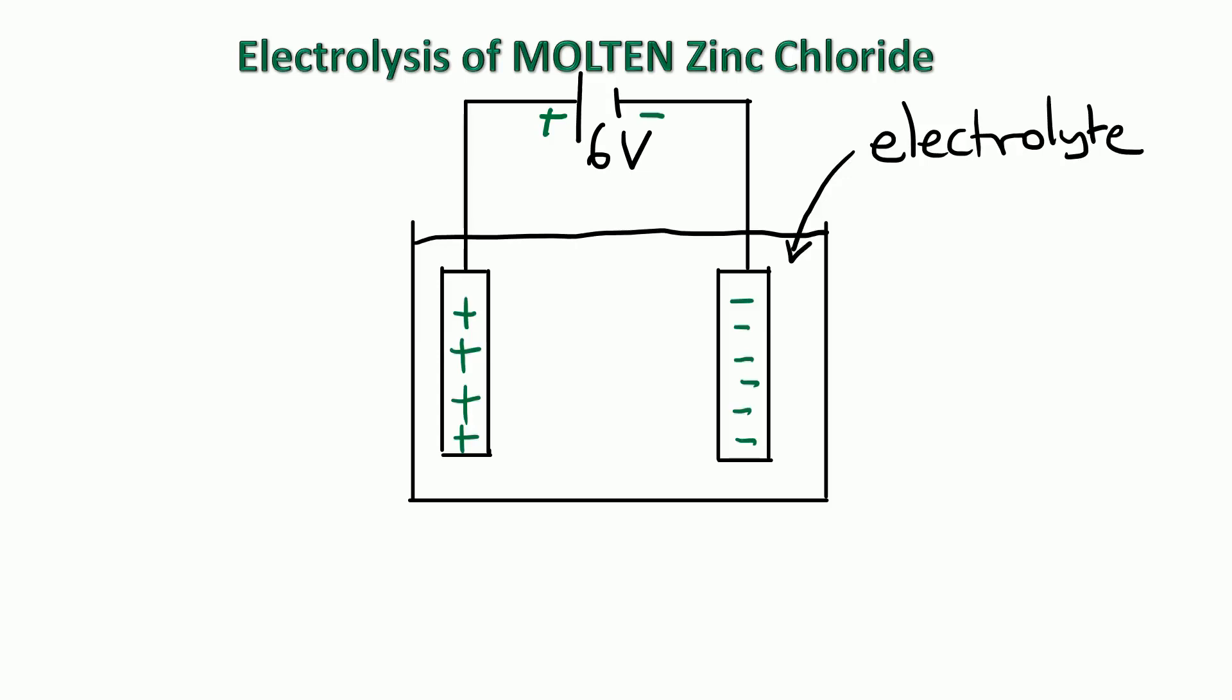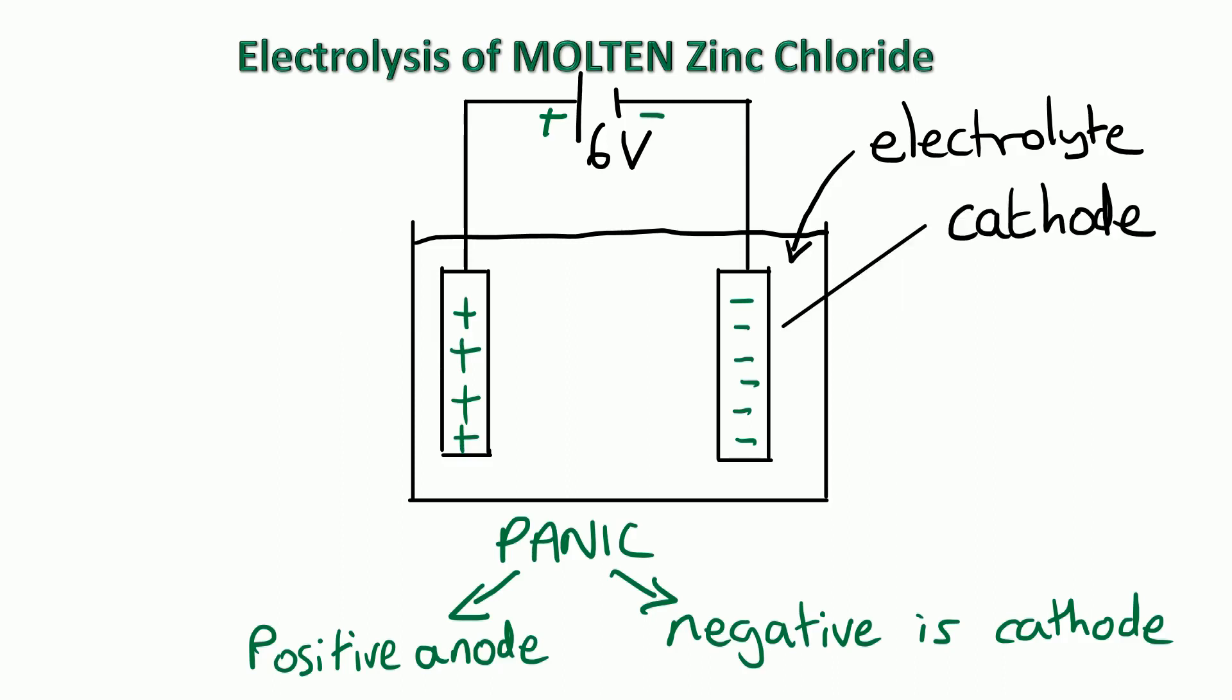So one side becomes positive and one electrode becomes negative. So how do we remember which is the anode and which is the cathode? Well we remember PANIC and that stands for Positive Anode and Negative Is Cathode. So we can now label the negative cathode on the right and in this case the positive anode is on the left.